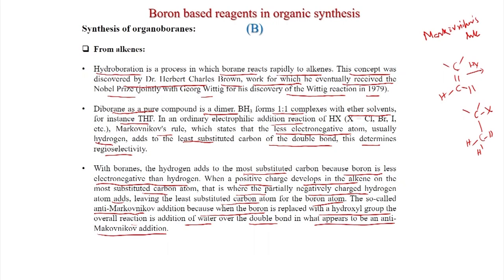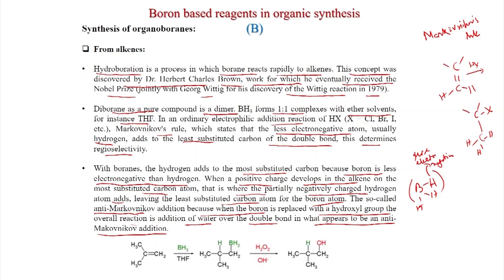The positive charge is generated at the most substituted carbon atom. The hydride hydrogen is the more electronegative here, so hydrogen adds to the most substituted carbon atom. For an unsymmetrical olefin, BH2 adds to the terminal carbon, hydrogen adds to the most substituted carbon, and after H2O2 and hydroxide treatment, the BH2 can be converted to an alcohol. This is formally an anti-Markovnikov reaction because ultimately hydrogen adds to the most substituted carbon and OH goes to the least substituted carbon.